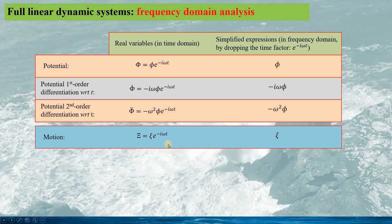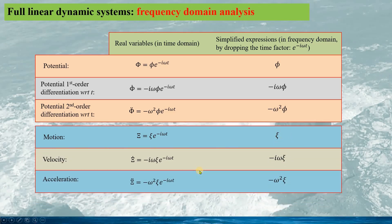Similarly, for the motion of the structure, capital XI is expressed as this. Here XI is the complex amplitude of the structure motion, and its frequency domain expression is simply given as XI. The time factor is dropped, and the corresponding velocity and acceleration are given by the first-order and second-order differentiations of the real motion capital XI with regard to time. In the frequency domain, we again drop the time factors.